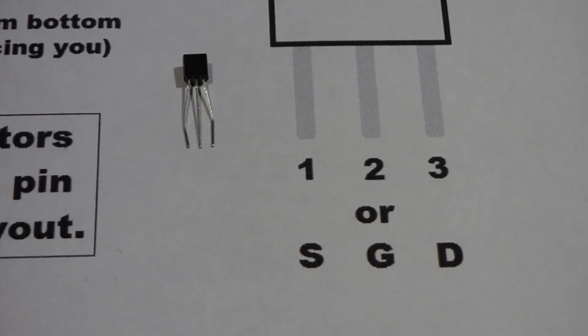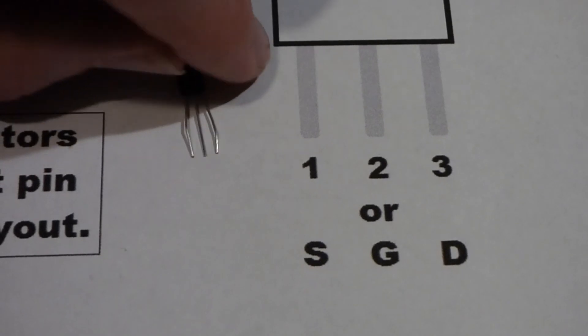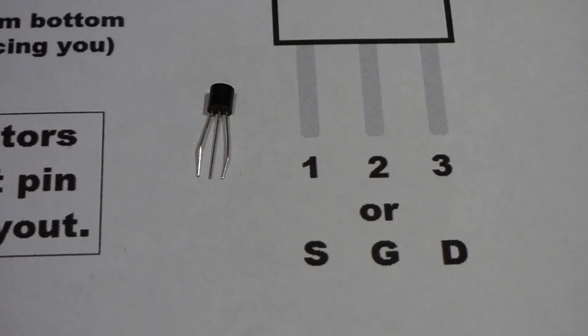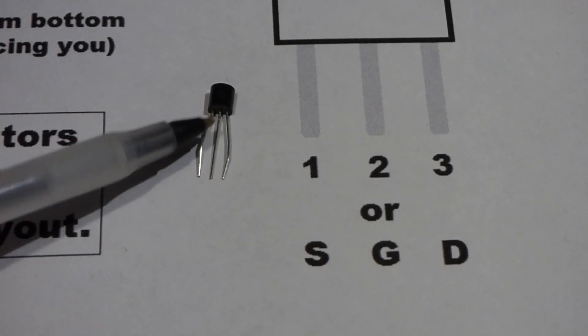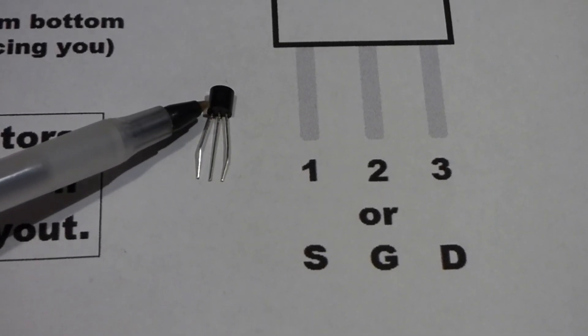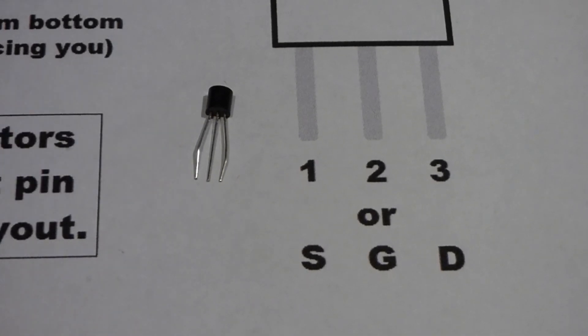Sometimes they draw the transistor so that the round side is facing you. And then if you're used to looking at it with the flat side facing you, if you're not paying attention that the diagram is flipped around, then you're going to have your pins wrong. So that's something you've got to be aware of, the direction that the transistor is facing in the diagram.